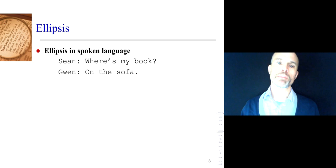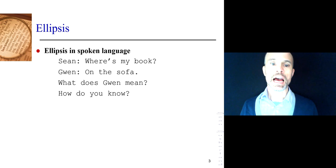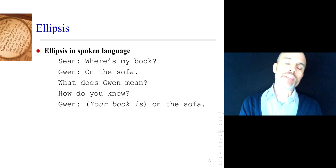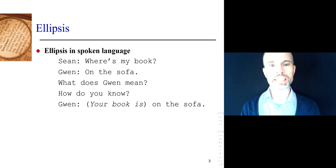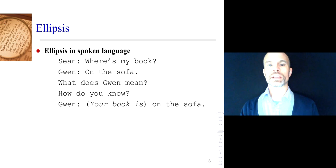Think of this simple example. I say, where's my book? And my wife says, on the sofa. A good way to think about ellipsis is to imagine the difference: someone who hears both lines — 'where's my book?' and 'on the sofa' — will understand what's meant. They will understand that Gwen is saying your book is on the sofa. She has to mean that. But think about someone who steps into the room just as Gwen says 'on the sofa' — they enter and hear only that.